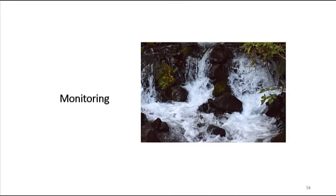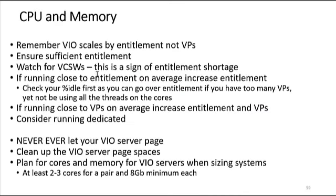Finally, we want to talk about monitoring your VIO servers. It scales by entitlement, so it's critical you have sufficient entitlement. Nmon shows you quite nicely — make sure you're not going above entitlement on your VIO very much. You can look for things like virtual context switches: if you see a lot of virtual context switches on a VIO server, you may very well be running out of entitlement. If you're getting very close to your virtual processors on average, you probably need to increase entitlement and VPs. Don't ever let your VIO server page — it needs to have enough memory. People will add up all the memory and cores they need for their client LPARs and forget that they need to add at least two cores and 16 gig of memory for their VIO servers, plus all the space for hypervisor page tables.